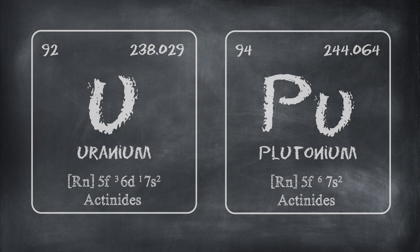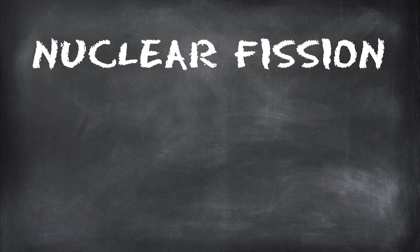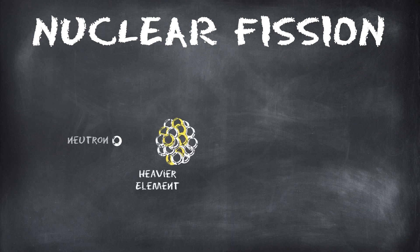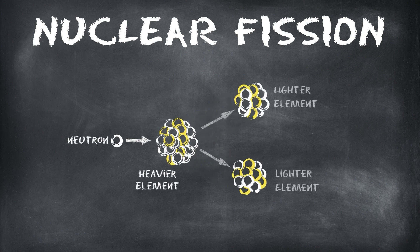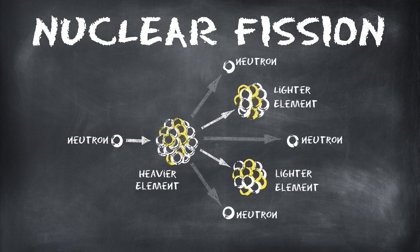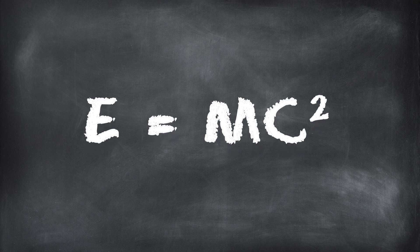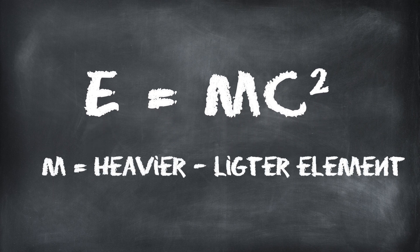To calculate the energy released from a nuclear bomb, we must first understand nuclear fission. In nuclear fission, an atom of a heavy nuclear element is bombarded with neutrons, causing it to break down into lighter elements while releasing additional neutrons, which go on to break other atoms, thus starting a chain reaction. We can use E = mc² to calculate the energy released, where m is the difference in mass between the heavier and lighter elements.